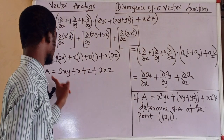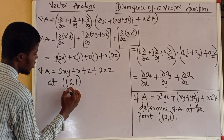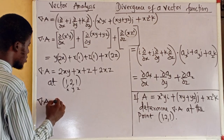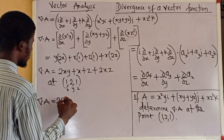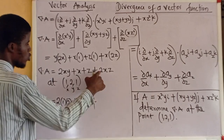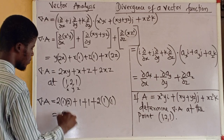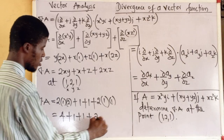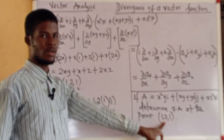Now what is the divergence of A at the point (1, 2, 1)? Here x=1, y=2, z=1. Making the substitution: divergence of A equals 2(1)(2) + 1 + 1 + 2(1)(1), which is 4 + 1 + 1 + 2 = 8. So the divergence of A at this point is 8.